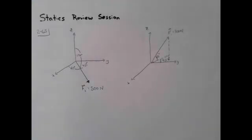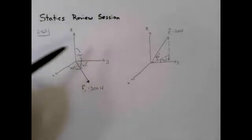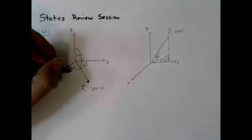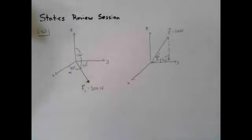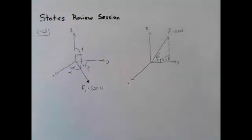The easiest vector to represent in Cartesian notation is this one, the one that uses our Cartesian angles. Typically these angles, if it's from the x-axis I think we call them alpha, if it's from the y-axis we call this angle beta, and if it's from the z-axis we call it gamma.